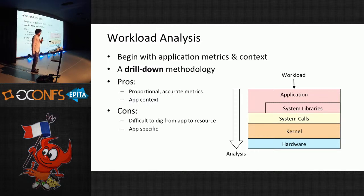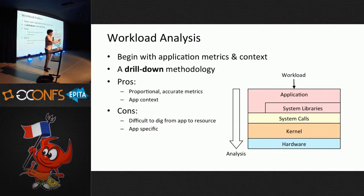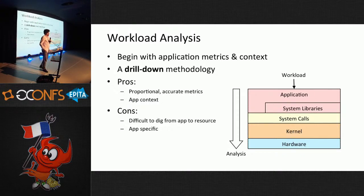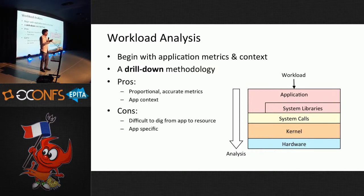Workload analysis, also known as top-down analysis, is where I begin with the workload applied to the system and then drill down. What's happening at the application level? The library level? System calls and the kernel, going down to hardware? If some requests are performing badly at the application level, I break down what library calls are happening, what system calls, where the latency is — is it in system calls, library calls, or the application code itself? And if it's in system calls, what specific call? Drilling down from top to the bottom, starting with the application context.